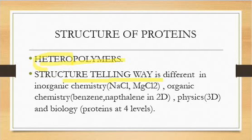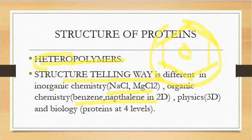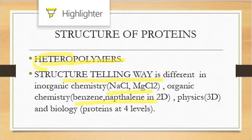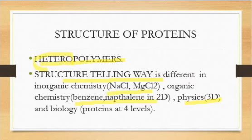When we define structure in different branches of chemistry and physics, the approach is different. In inorganic chemistry, we talk about structural formulas like MgCl2. In organic chemistry, we talk about two-dimensional structures, for example benzene or naphthalene. In physics, everything is considered three-dimensional. But in biology, we talk about 4 levels of protein structure.